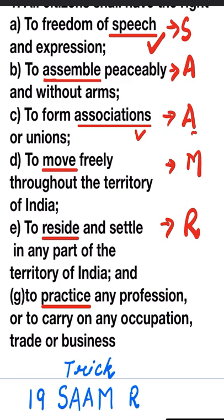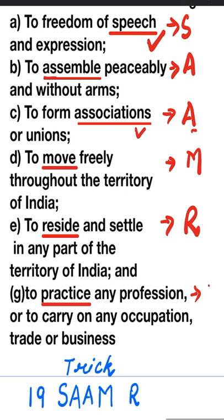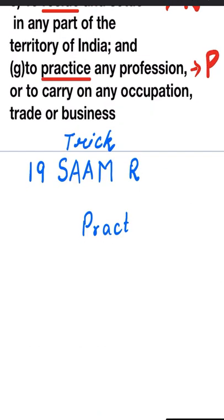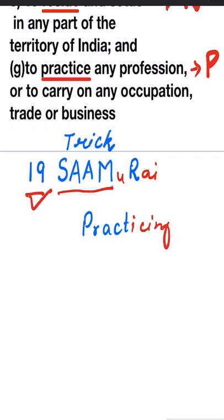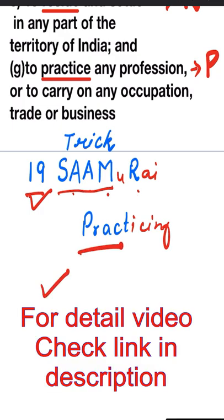To practice any profession or to carry on any occupation, trade or business — from the word 'practice' we take P. The trick is: 19 Samurai practicing their art. From Article 19, 'Samurai' gives us S — speech, A — assemble, A — association, M — move, U — (Article 19), R — reside, and P — practice. For more such tricks, subscribe to my channel. Thanks for watching.